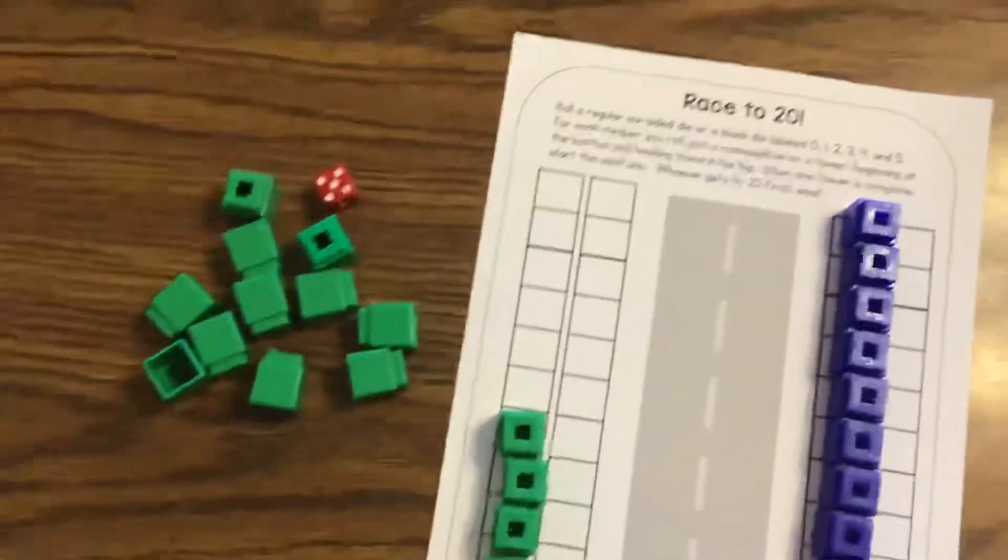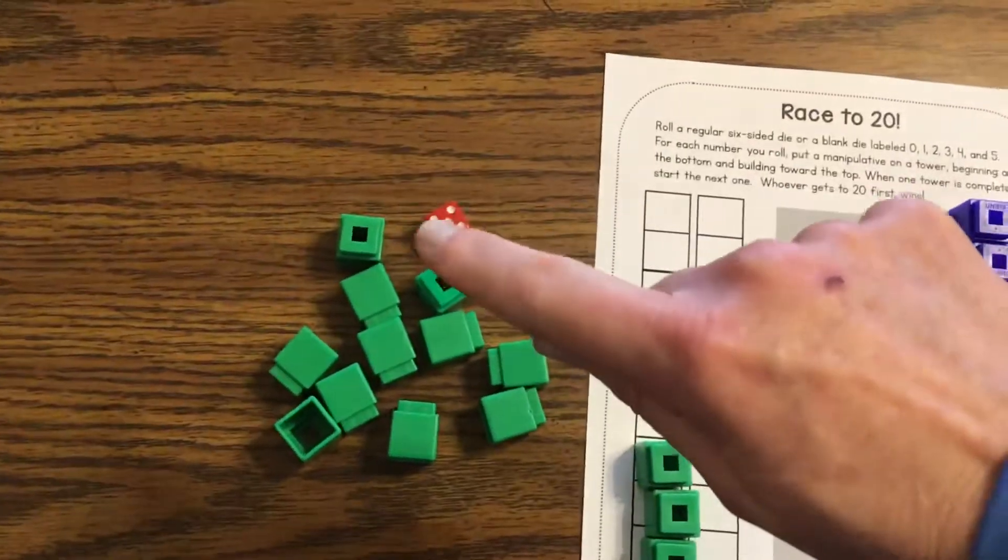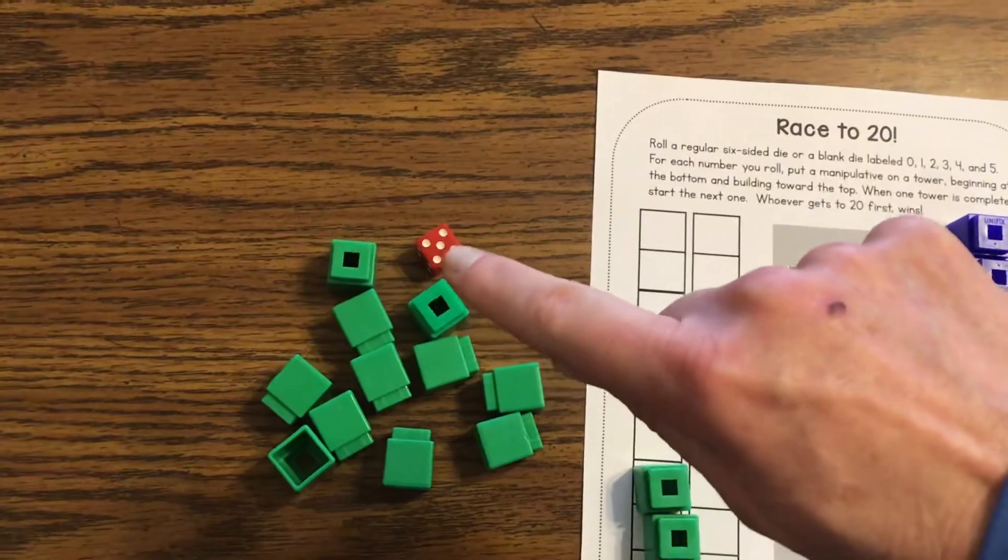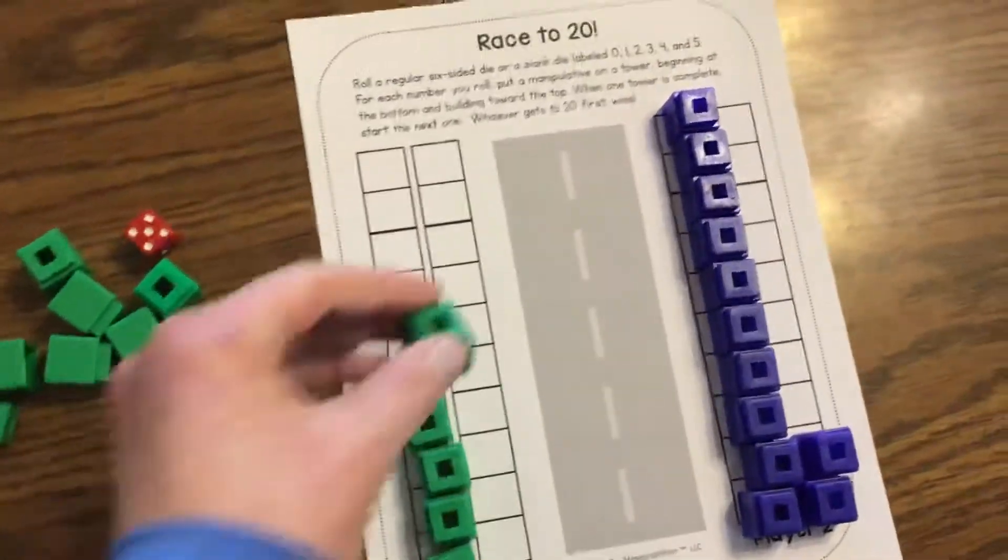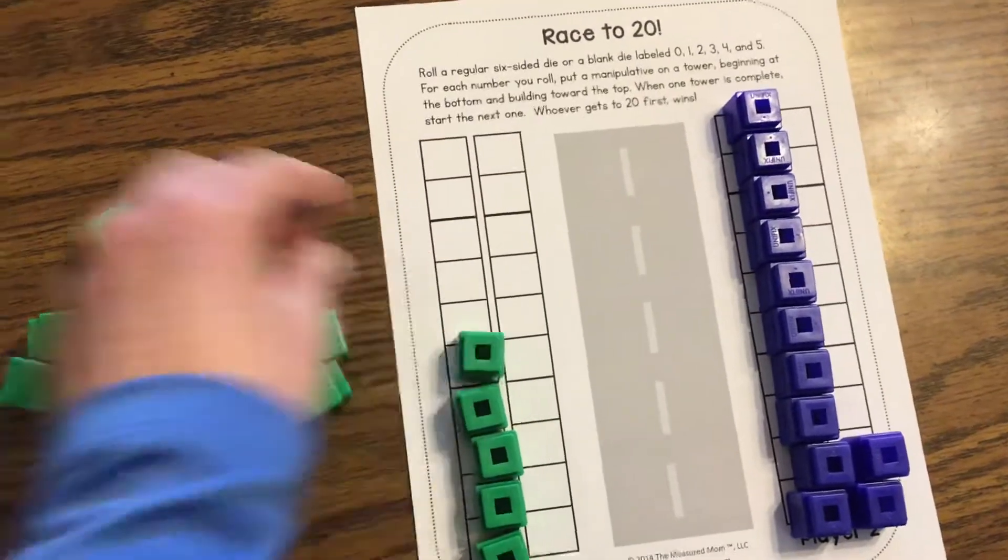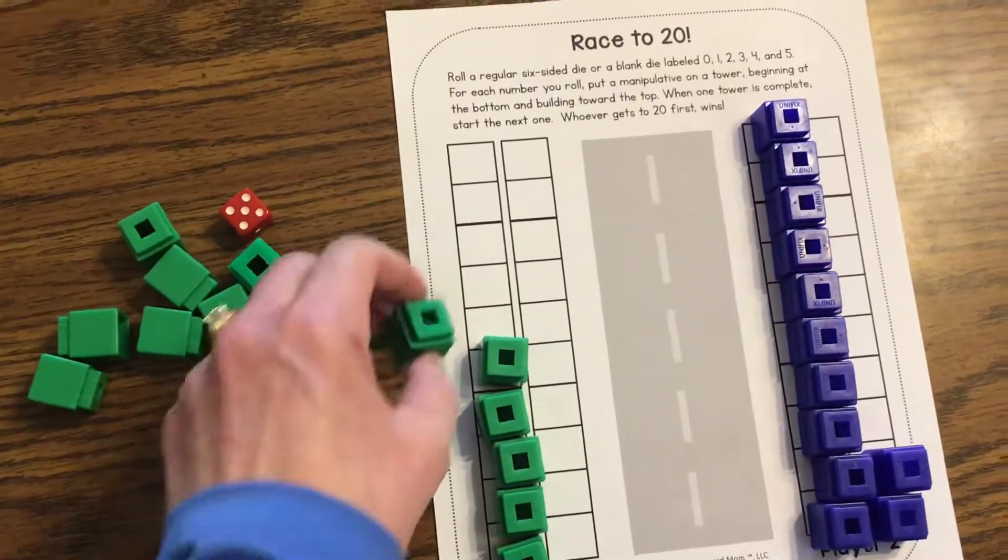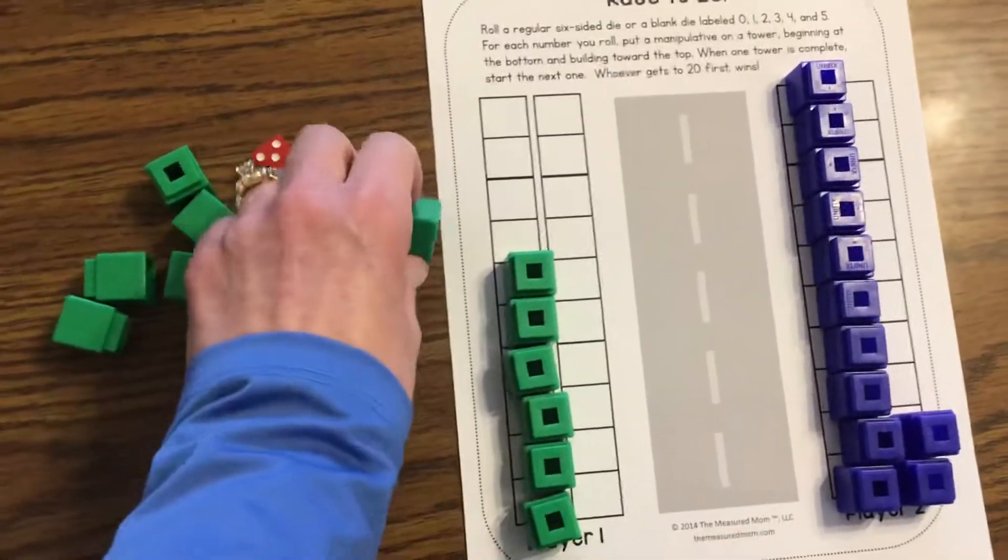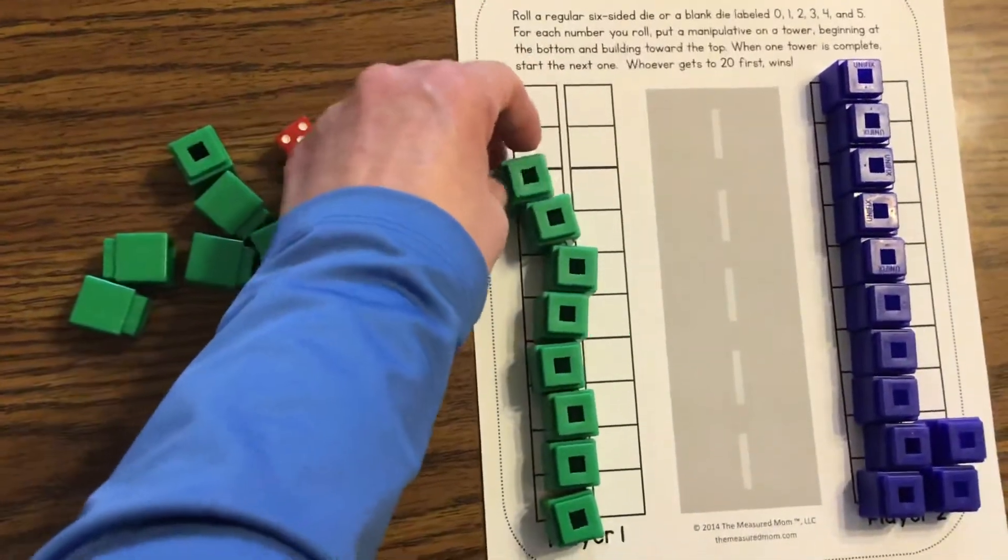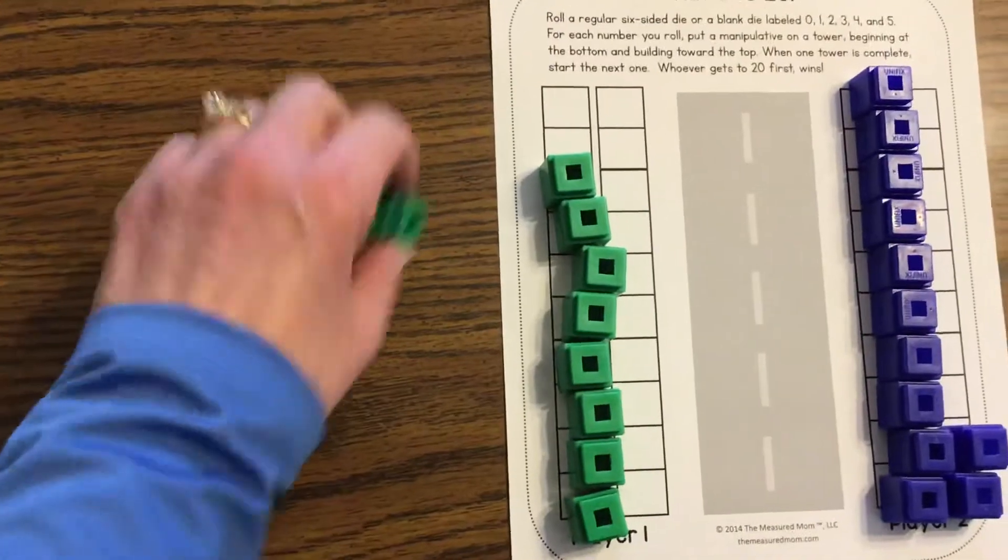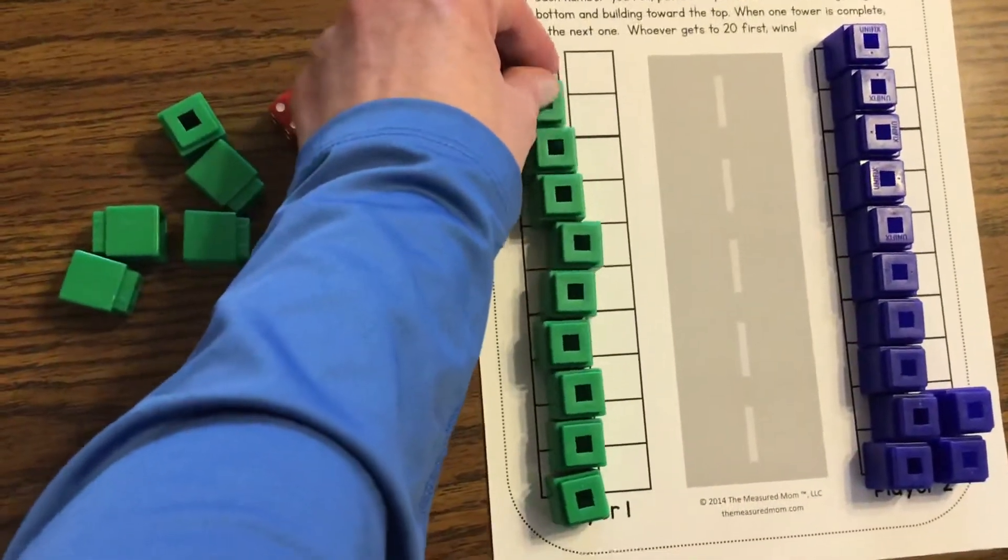All right, let's see how many I get this time. Ooh, let's count those. One, two, three, four, five. Okay, I'm on my way. One, two, three, four, five. I'm almost done with my first column.